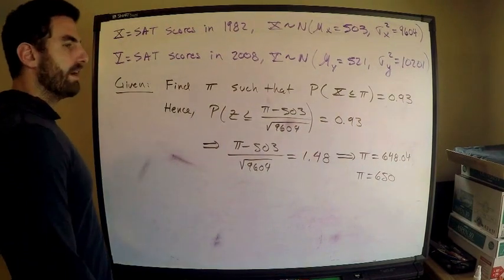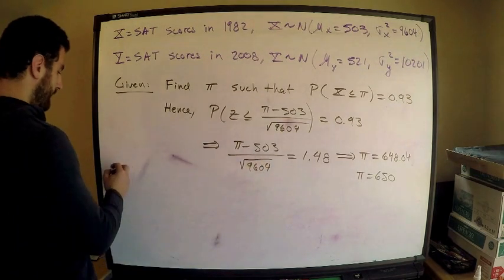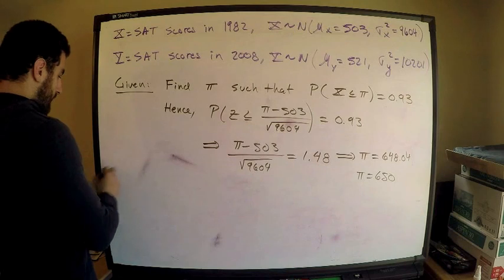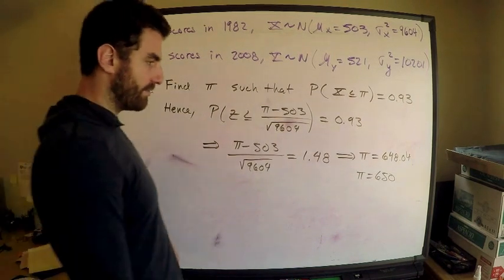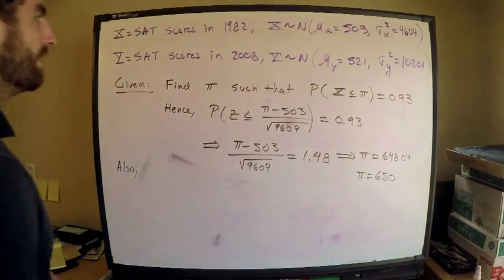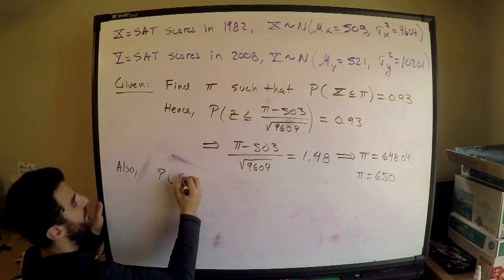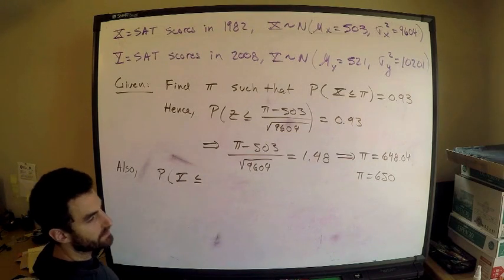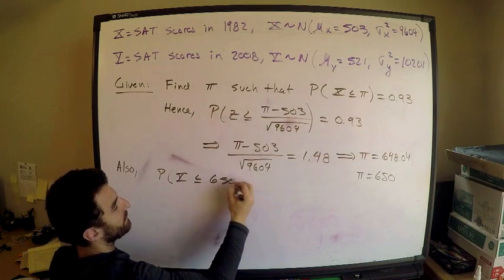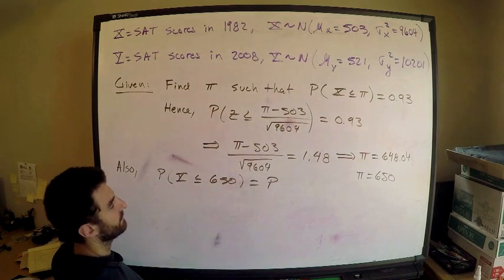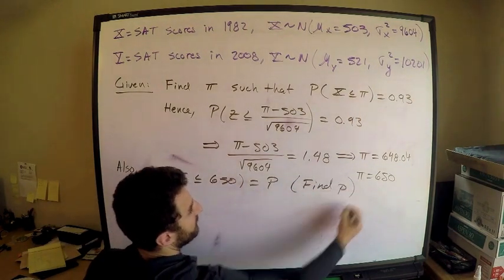Now I need to find the percentile of Abby's score. Abby got the same thing. So also, Abby's score—that's mom's score, 650—she got the same score. Now I need to compute this for Y. So now I have that the probability that Y is less than or equal to—I want to find the percentile in the year 2008 for 650—equals P. I need to find P.